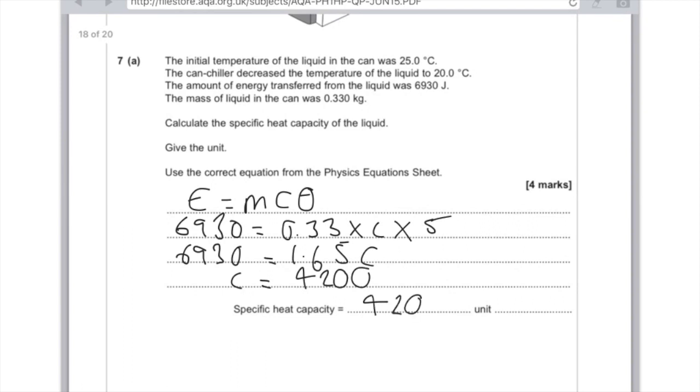Now either you already know the units off by heart, or you can work it out. Energy is measured in joules, mass in kilograms, and temperature change in degrees Celsius. Rearranging to make C the subject, it becomes J divided by kilograms Celsius, which you can rewrite like this.